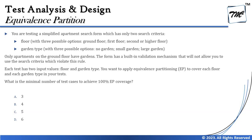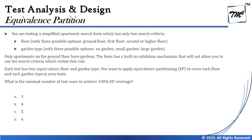Each test has two input values — floor and garden type — and that's how we combine the test cases. We want to apply equivalence partitioning to cover each floor and each garden type at least once, forming the minimum set of combinations. What is the minimum number of test cases to achieve 100% equivalence partition coverage? The options given are three, four, five, or six.